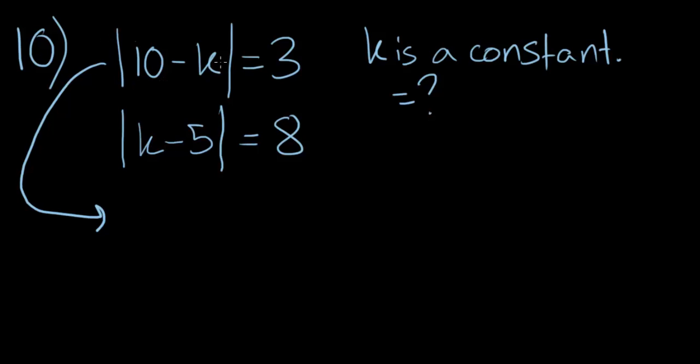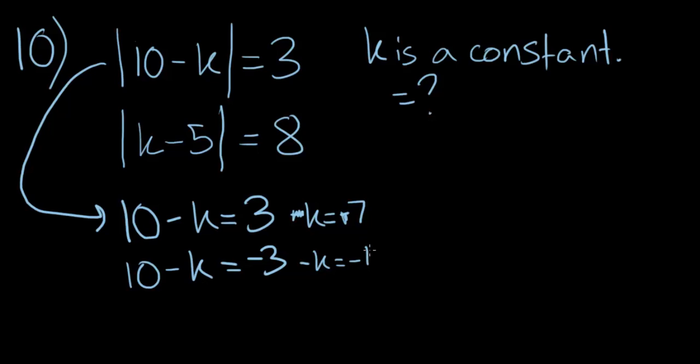So it says the absolute value of 10 minus k is equal to 3. We could do it like this. Either 10 minus k is equal to 3, or 10 minus k is equal to negative 3. In the first equation's case, it will be 10 minus k is equal to 3. So minus k is equal to minus 7, or k is equal to 7. In the latter's case, 10 minus k will be equal to minus 3, which means minus k is equal to minus 13, or just k is equal to 13. So in this case, k can be equal to either 7 or 13.